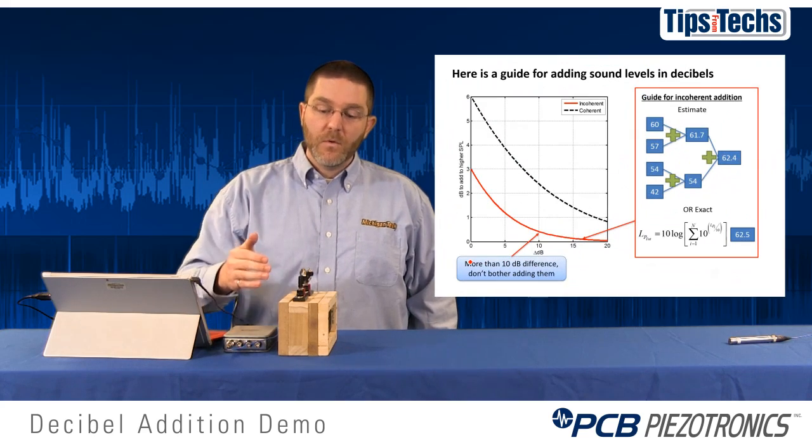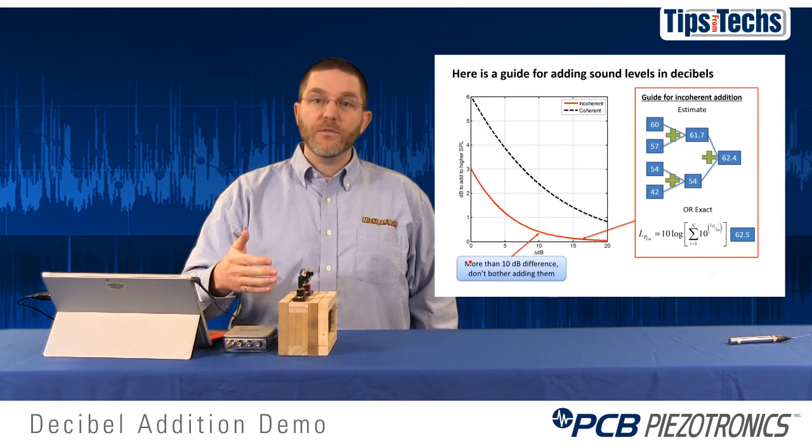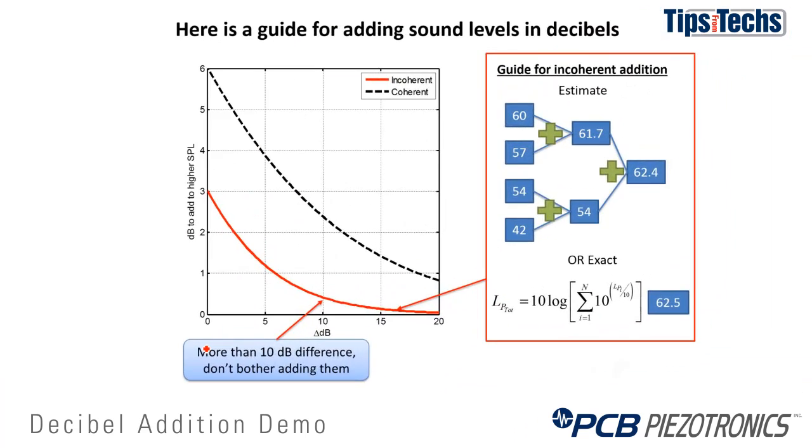Next, we'll look at what happens when we add two sources together with different RMS values. Here you see a simple method for adding decibel levels. First, you choose whether your sources are coherent or incoherent and then select the corresponding curve on the graph on the left.